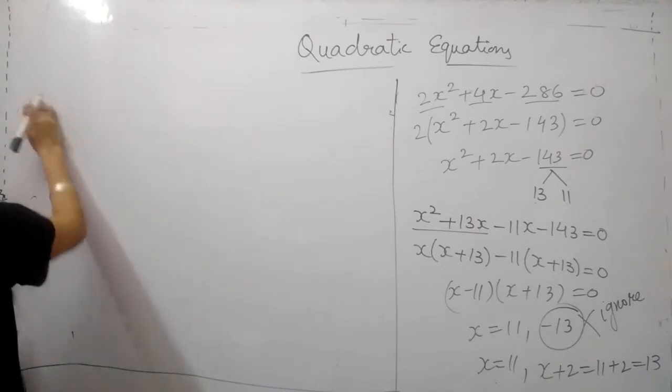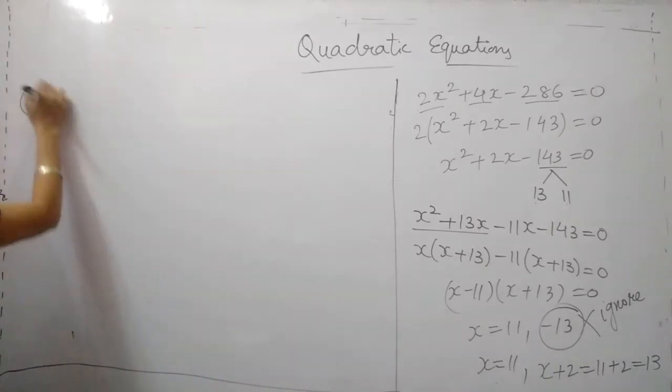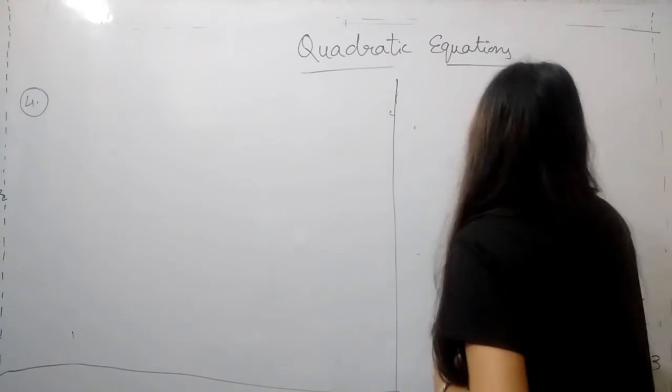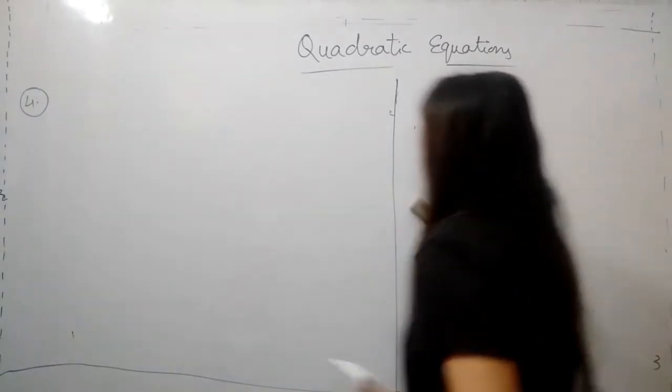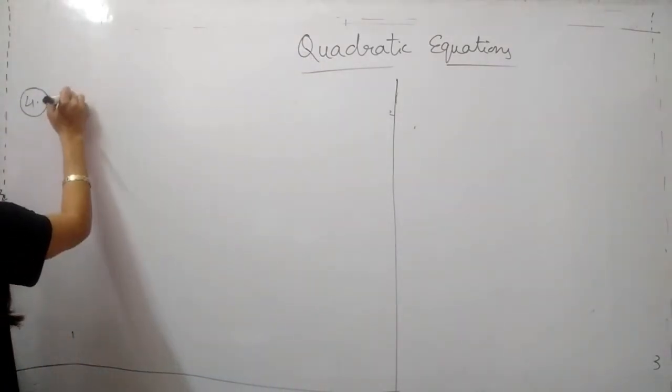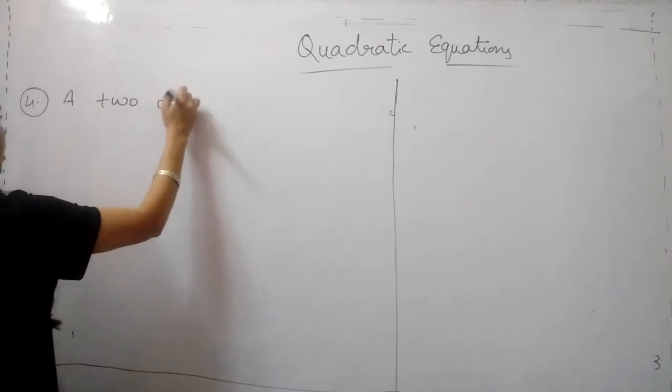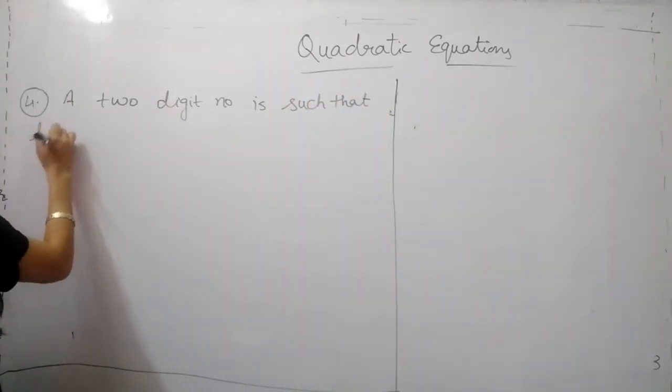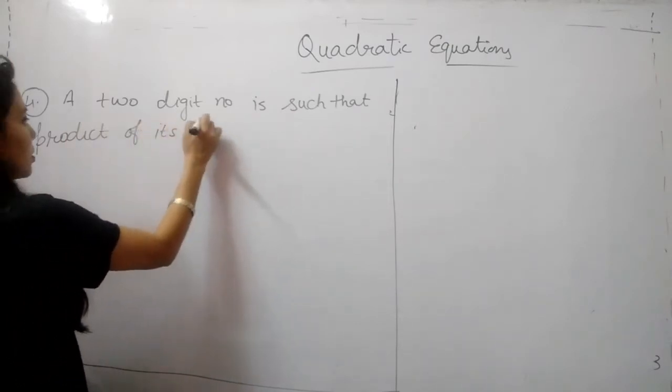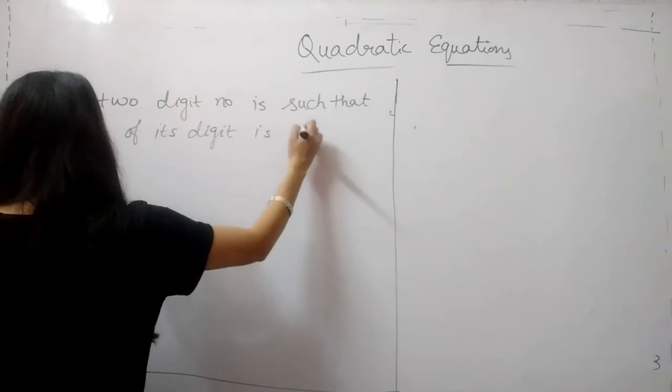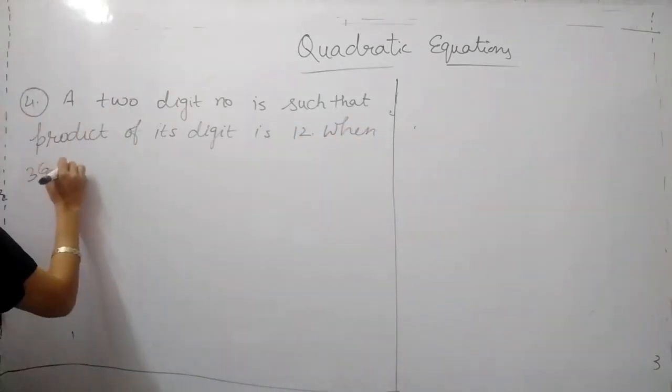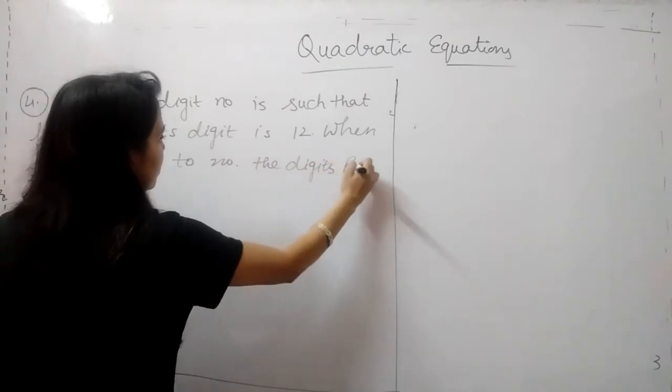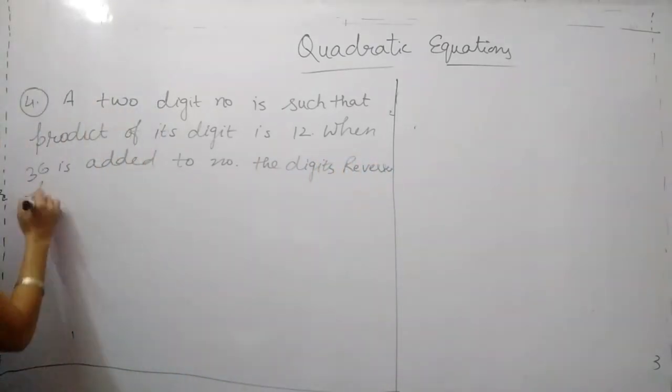Next question is related to digits, digits and the number. Please understand this concept very carefully. Question is, a two digit number is such that product of its digits is 12. When 36 is added to number, the digits reverse.